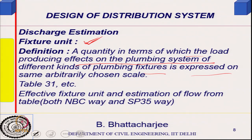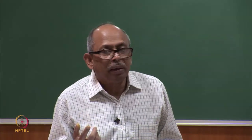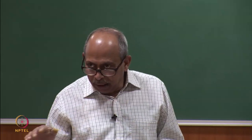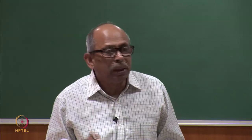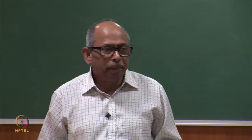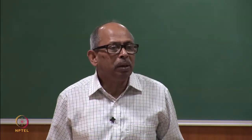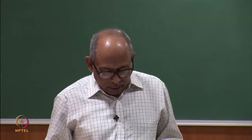For example, a wash basin tap might be one fixture unit and a shower might be two fixture units. You bring in all your load expressed in terms of fixture units — it is the load-producing capacity of different fixtures expressed in a uniform unit. This is given in Table 31 of SP 35 for different types of fixtures.